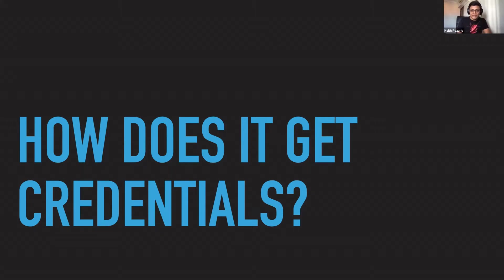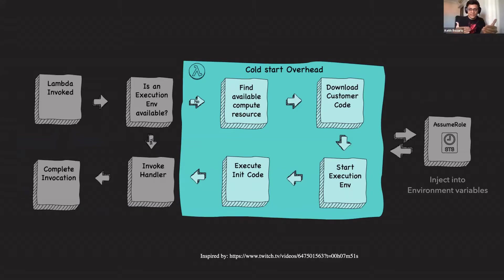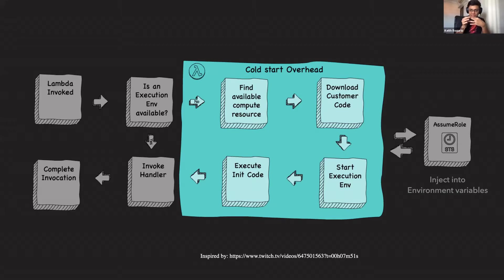The credentials are specifically injected into the environment variables. The AWS SDK — whether Java, Python, Ruby, or Rust — looks for credentials in three places: environment variables, the AWS credentials file, or the instance metadata service for EC2. For Lambda, it's always injected directly into the environment variables. So at the cold start of the process, the first time that function gets called, a temporary set of credentials is generated and injected into the process environment variable. Now we know: if you want the credentials, they're in the environment variables.